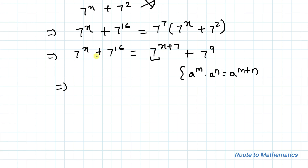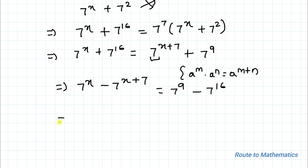Now I will take the x power terms to the left-hand side and 7 to the power 16 to the right-hand side. So we have: 7 to the power x minus 7 to the power x plus 7 equals 7 to the power 9 minus 7 to the power 16. I will now take 7 to the power x as a common factor.